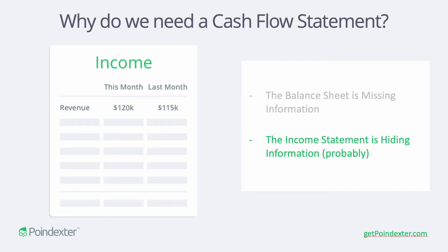When we take a look at the income statement we're dealing with a slightly different issue. When we say it's hiding information, what we mean is that just because we see numbers reported for this month — let's say $120,000 in revenue — it doesn't necessarily mean that we collected $120,000 from clients or customers; it just means that we earned it. The reason we're allowed to do this is because of what's known as accrual accounting principles, which tell us we're able to recognize revenue in the period that we actually earn it. It might take a few days, weeks, or hopefully not months for customers to actually pay us, but we recognize it in the month we earned it. The same goes for costs and expenses, keeping everything within the parameters of that single month.